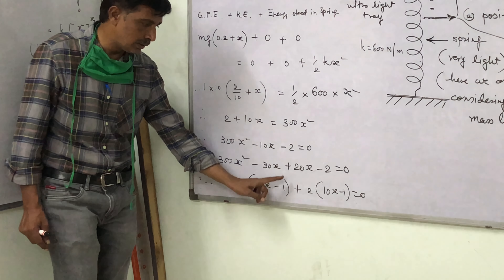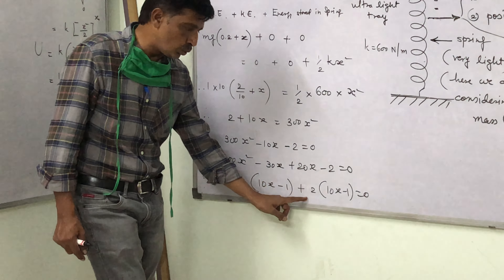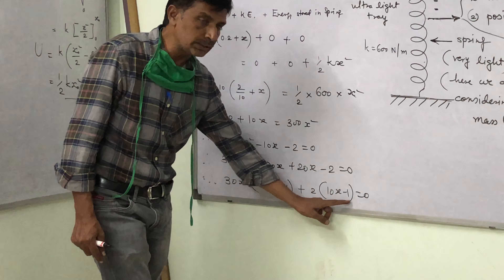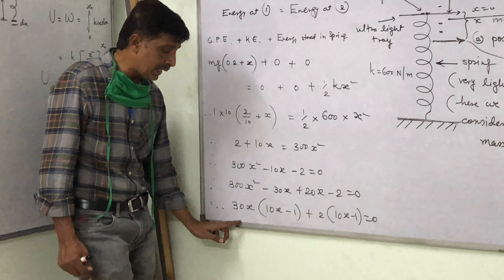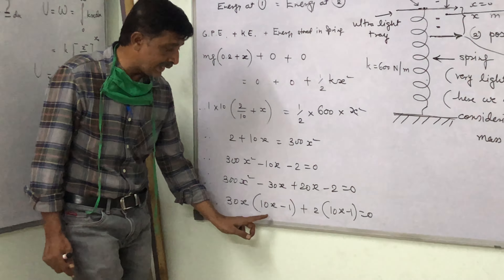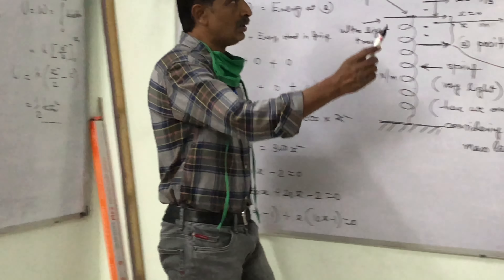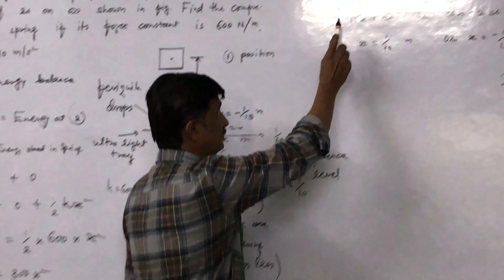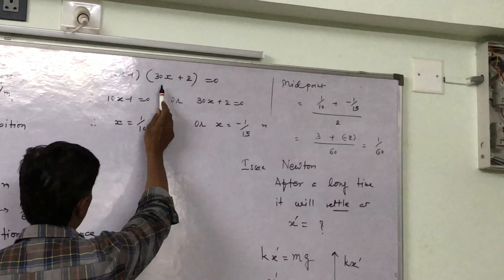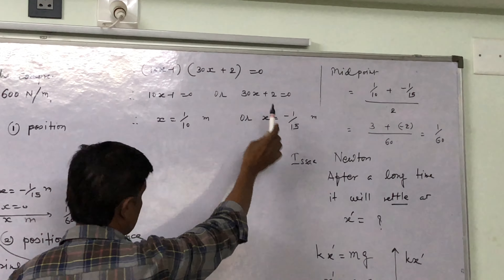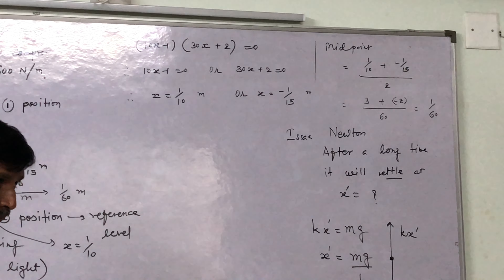After simplification, 2 + 10x = 300x². We get a quadratic equation: 300x² − 10x − 2 = 0.